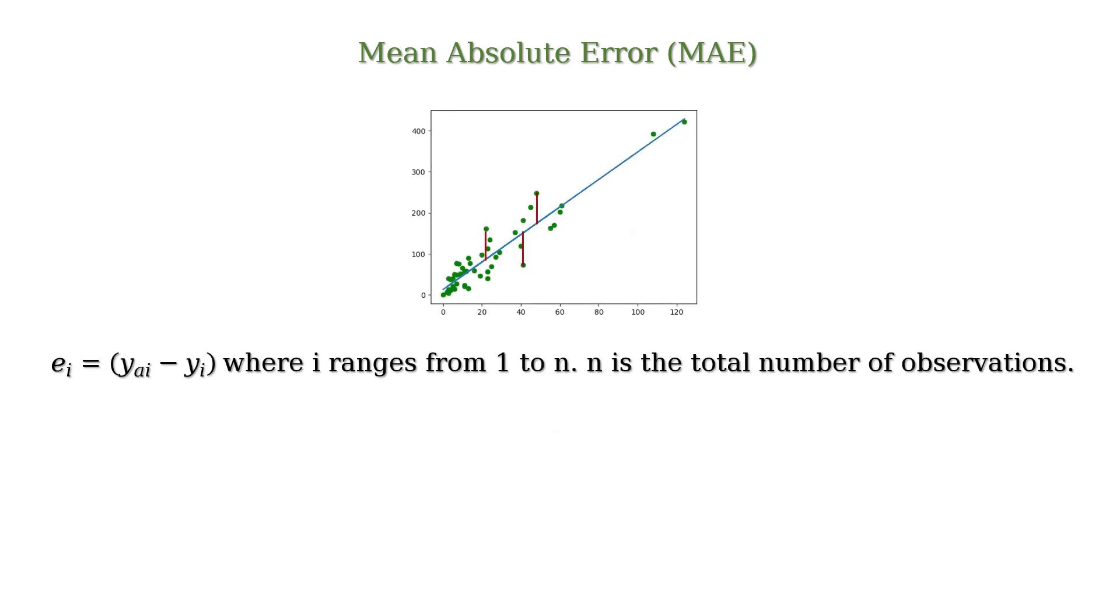The error or the residual can be expressed like the following: ei is equal to yai minus yi where i ranges from 1 to n. n is the total number of observations.